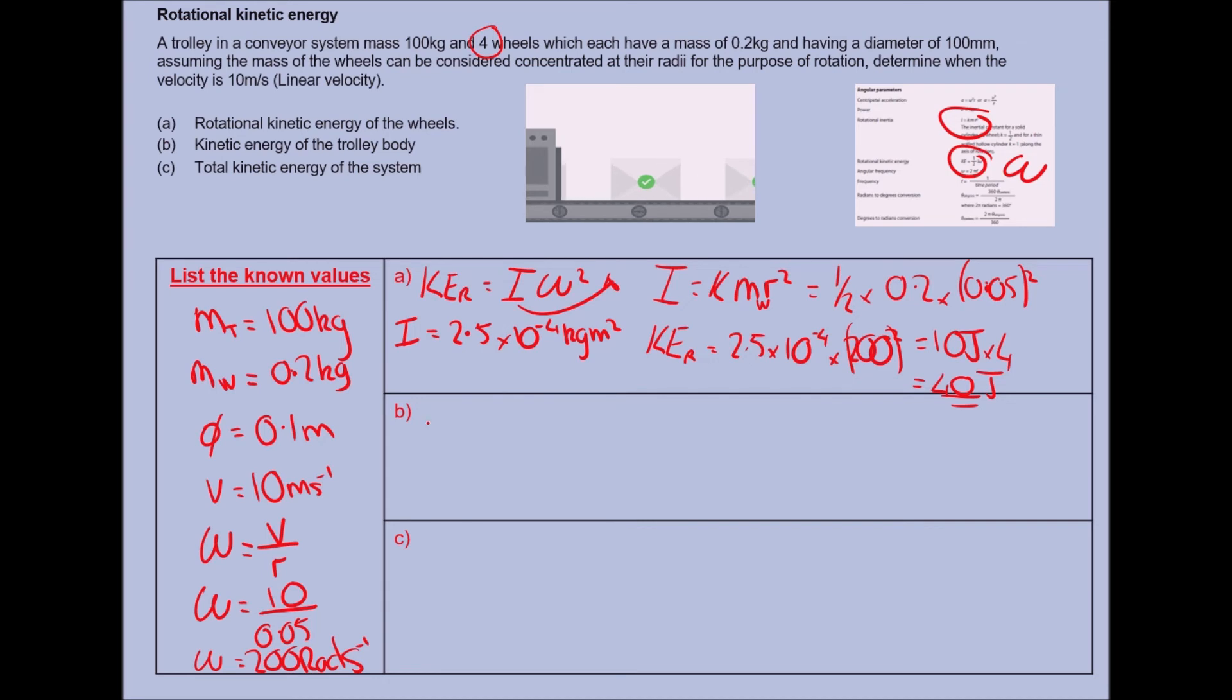So that's our first part of that question. There'll be some practice ones in your workbook so you can have a little go. The rotating kinetic energy, these wheels are rotating, the kinetic energy is also rotating, so therefore it's been generated. There's four of them, so I multiplied that by four.